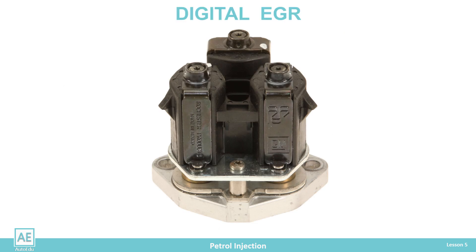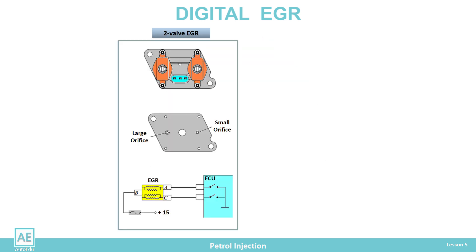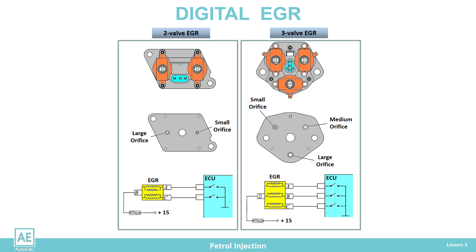Some vehicles also have a digital type of EGR valve. It consists of two or three electromagnetic valves that control the opening of orifices of different sizes. The engine control unit controls the opening of each solenoid valve individually; when a solenoid is energized, its plunger is lifted and exhaust gas can recirculate through the orifice into the intake manifold. The computer controls the total amount of exhaust gas through the valve opening combination.